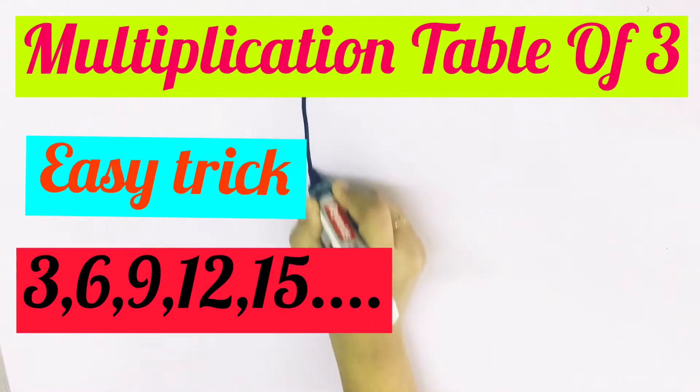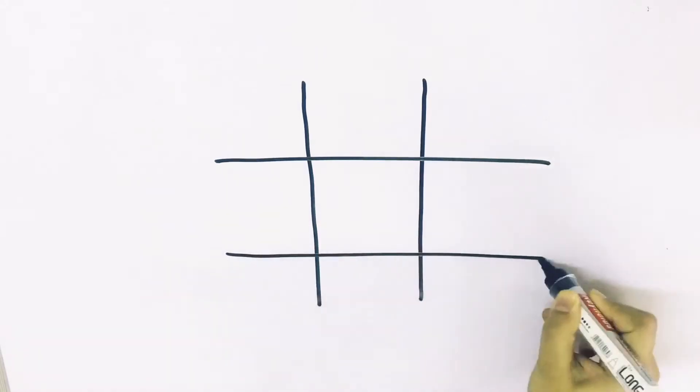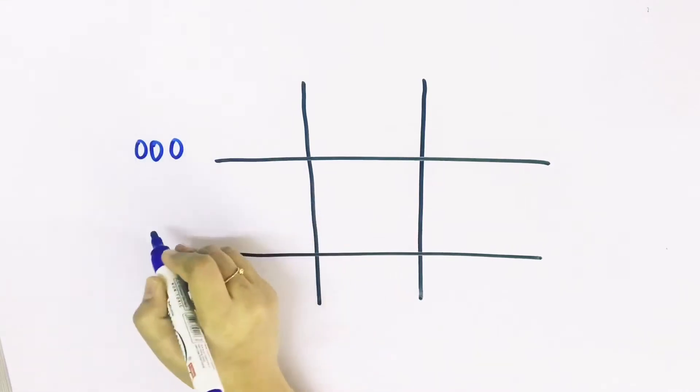Hello friends, welcome to my channel. So let's learn the table of three. First make two vertical lines and two horizontal lines. Then we write zeros three times, ones three times, and twos three times like this.